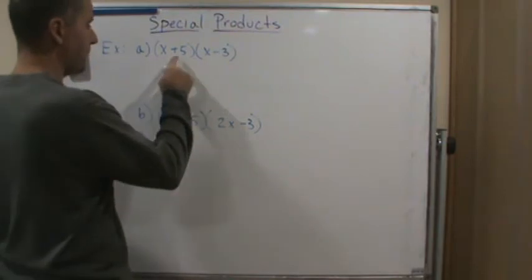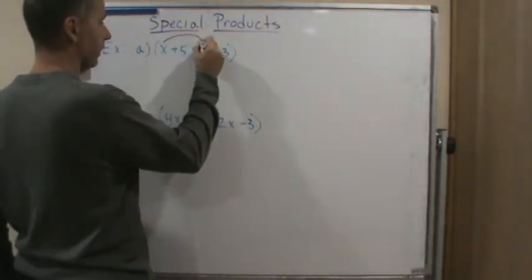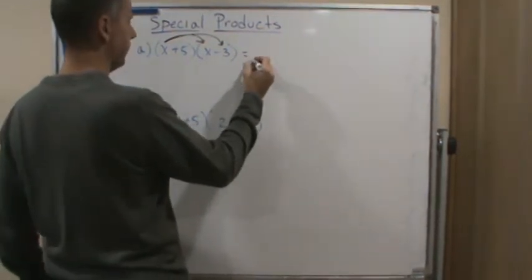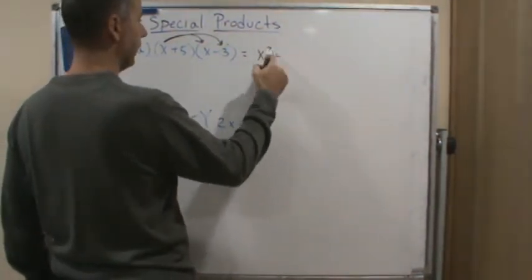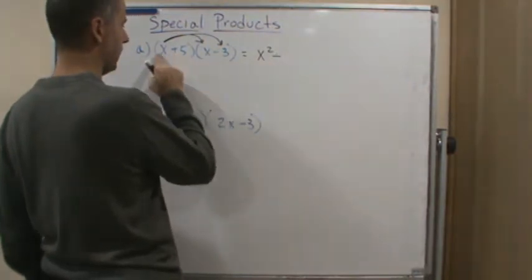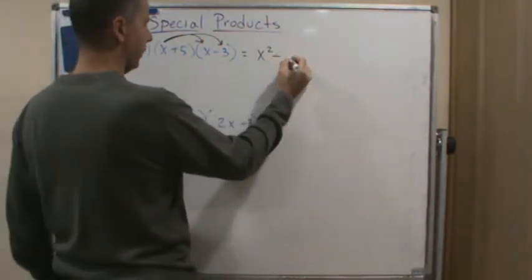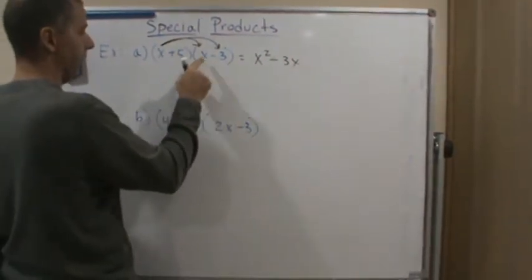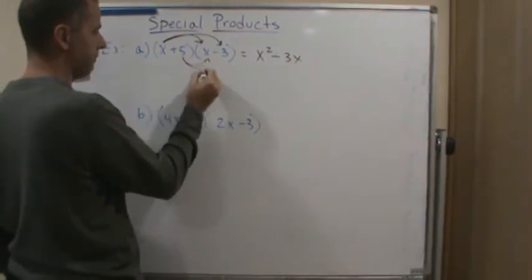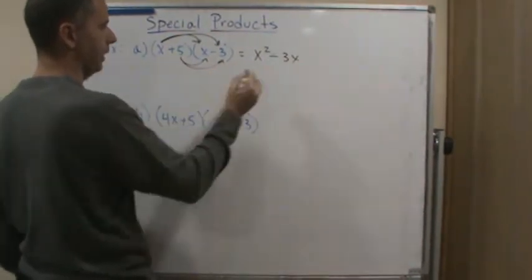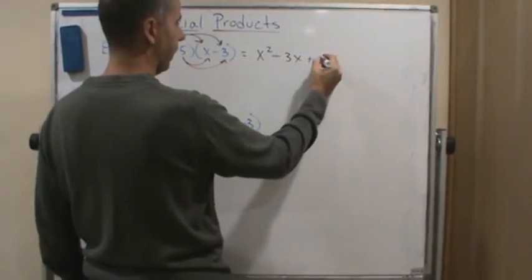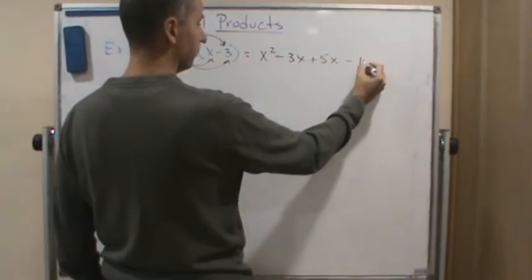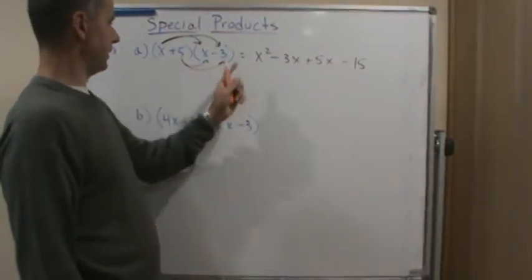So this first one, I'm going to use the distributive property. I'm going to distribute the x across these two, so that's going to give me x squared. There's a plus and a minus, so that gives me a subtraction — three x. Now I'm going to distribute the five across both of them, giving me plus five x minus fifteen.